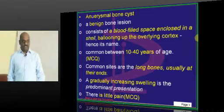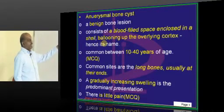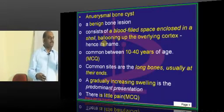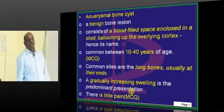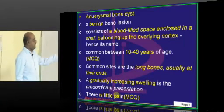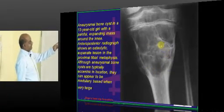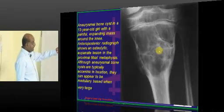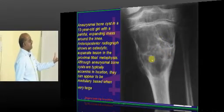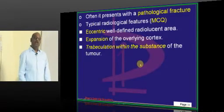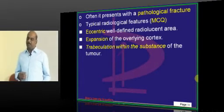What is an aneurysmal bone cyst? It is also benign. It is a blood-filled enclosed cavity that leads to ballooning of the overlying cortex — hence it is like an aneurysm. Simple cysts don't balloon; this one does. The common age is between 10 to 40 years. It involves long bones, usually at their ends, with very little pain. Here is a 30-year-old with an expanding mass in the knee showing an osteolytic expansile lesion in the proximal tibial metaphysis. A good number of times aneurysmal bone cysts also lead to pathological fracture.